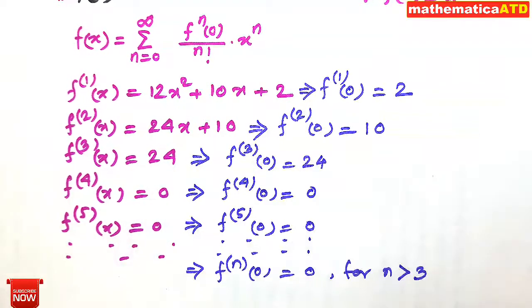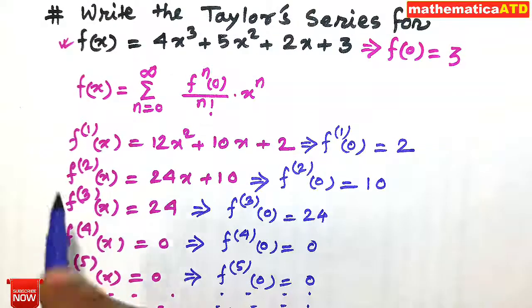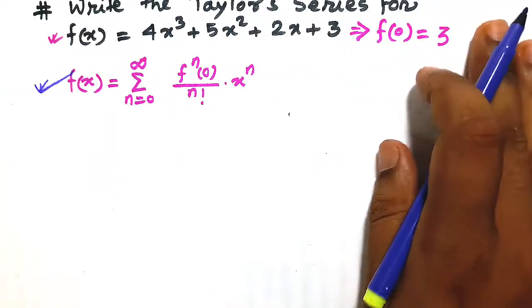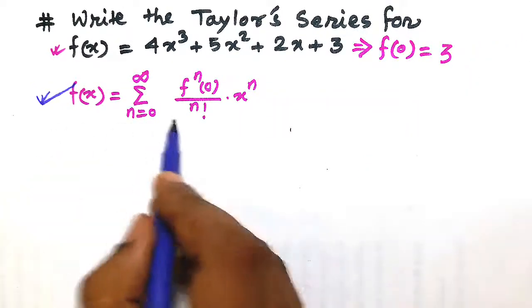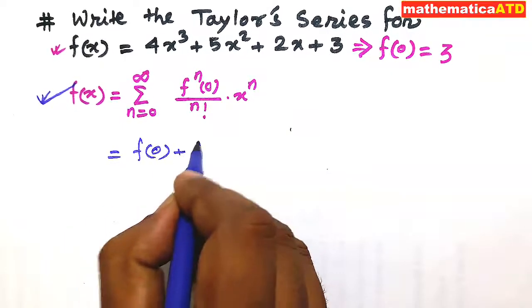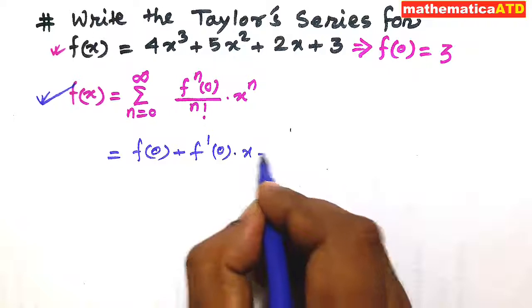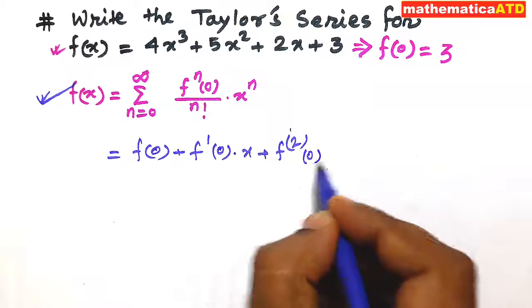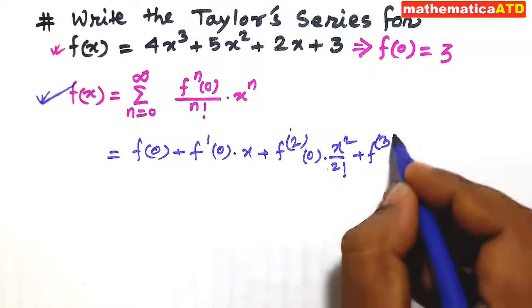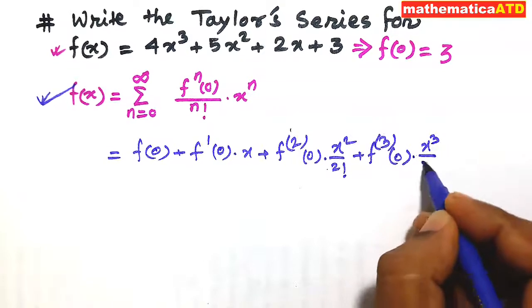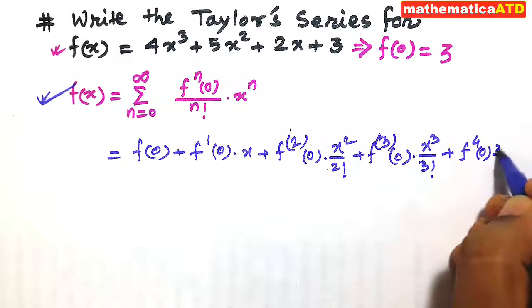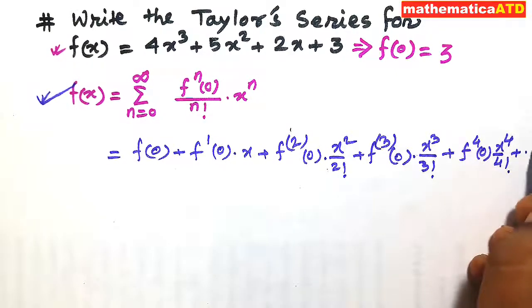Now we have all the values, so we can substitute them into the Taylor series. The expansion is: f(x) = f(0) + f'(0)·x + f''(0)·x²/2! + f'''(0)·x³/3! + f''''(0)·x⁴/4! + and so on.